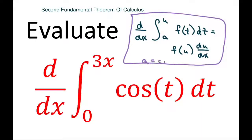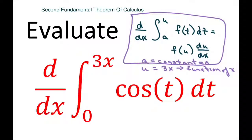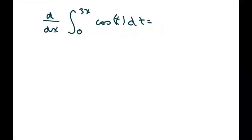So a is your constant — in our case it's zero — and u is the function of x, which is going to be 3x. So all I'm going to do is take this, and that's going to equal: take the derivative of your function, which is 3, and then write cosine of 3x.